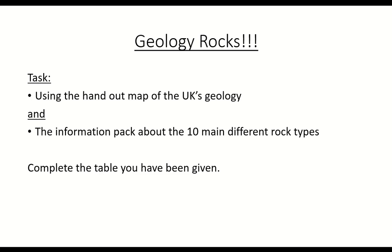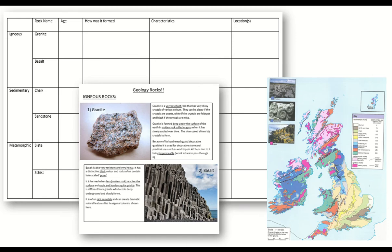You've got a general overview and definition of igneous, metamorphic, and sedimentary rocks, but you also need to know specific examples of each type. For example, chalk, limestone, and sandstone are all examples of sedimentary rocks; granite and basalt are both examples of igneous rocks; and schist is an example of a metamorphic rock. You'll find on 365 three pages of information — one for igneous, one for sedimentary, one for metamorphic — plus a table on the same document as your colourful geology UK map.